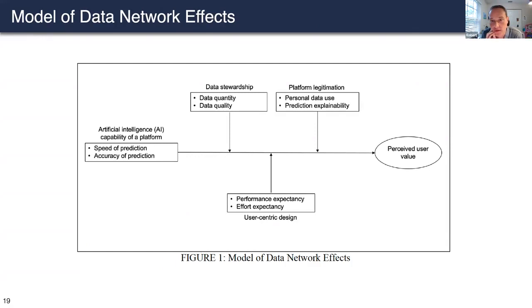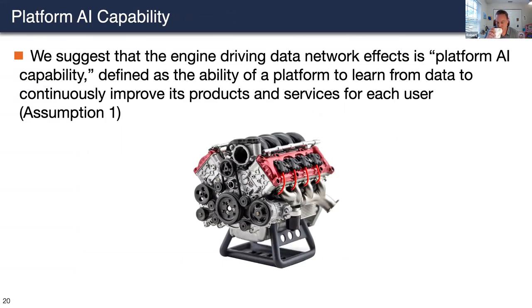We have a novel model — we call it a theoretical framework or model, not a theory. The core idea is that the artificial intelligence capability of a platform determines the perceived user value, with a couple of moderators that influence this main relationship. The engine driving data network effects is platform AI capability, defined as the ability of a platform to learn from data to continuously improve its products and services for each user. That's where you have the connection to network effects.